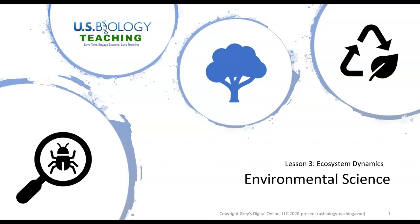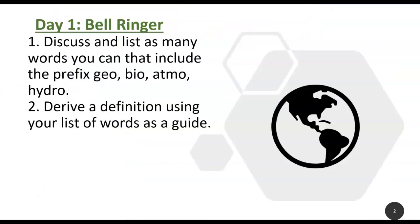The first thing you're going to do here is start with a bell ringer as directed by your teacher. Here you're going to discuss and list as many words as you can that include the prefix geo, bio, atmo, and hydro.